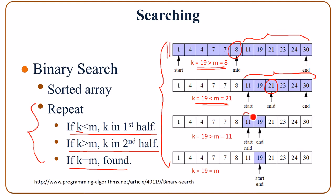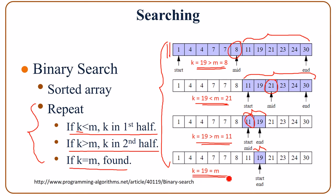Search for k in the first half of the array, which is here. The mid value now is 11. Comparing k and 11, k is greater than 11. So in the next step, we search for k in the second half of the array. At this time, the start, end, and mid elements in the array are the same one. k is now equal to mid, so k is found.